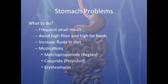Gastroparesis is treated by eating smaller meals but eating more frequently. Also, avoiding high-fat and high-fiber foods can reduce the symptoms. When eating, it is recommended that fluid in the diet is increased. If the lifestyle modifications do not work, then a person may be put on medications such as Regalyn, Propulsid, or Erythromycin.